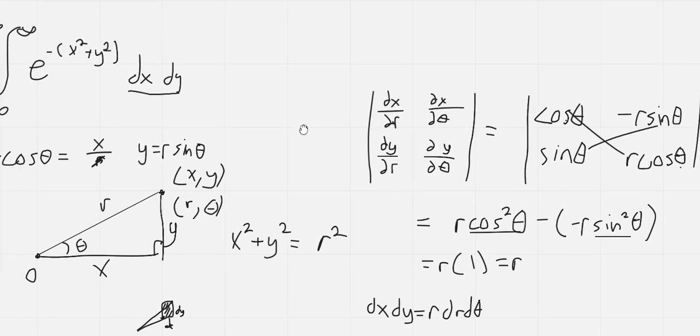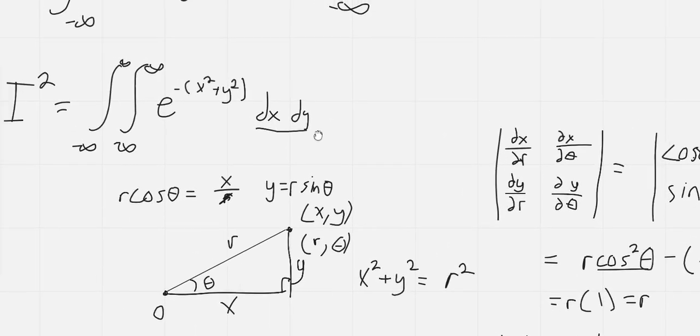Now we can rewrite this integral into polar coordinates. First we should think about our boundaries. If x and y both go from negative infinity to positive infinity then that means we're covering the entire plane. So we need to think about what bounds for r and theta will cover the entire plane.